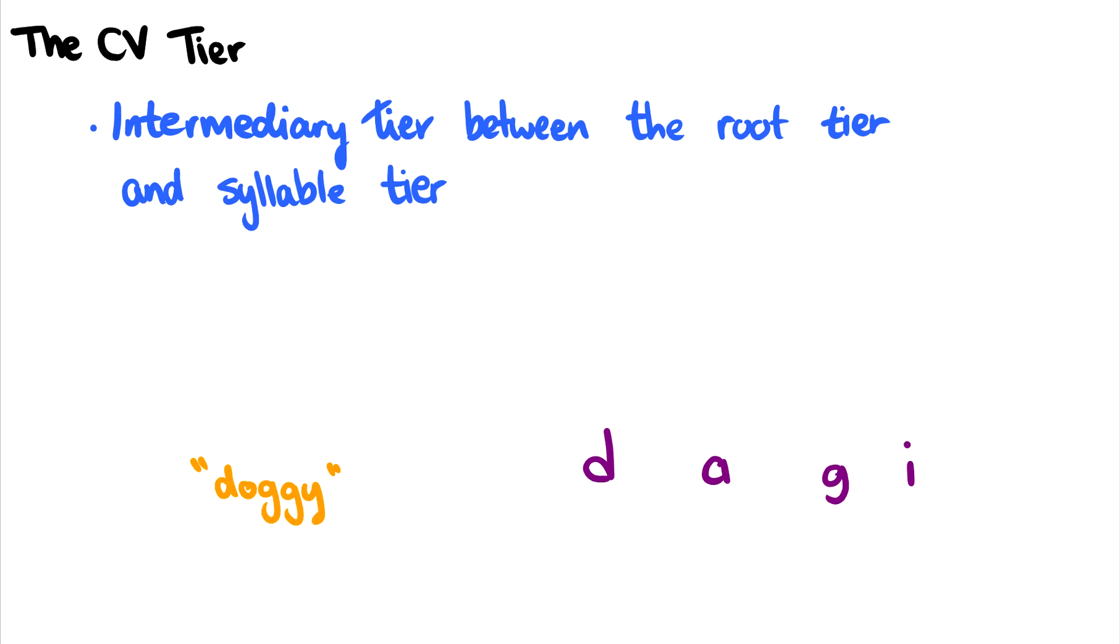This video is all about the CV tier, or the consonant-vowel tier, and this is a tier between the root and syllable tier.